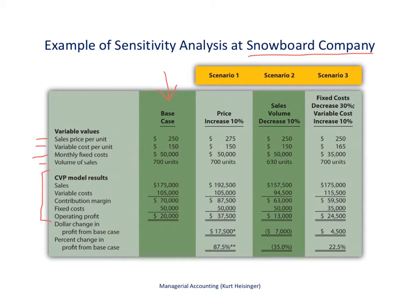So to parse this out a bit: if you look at the base case, we think our sales price per unit will be $250 for this snowboard that we are going to be selling, and we expect to be able to sell 700 units.